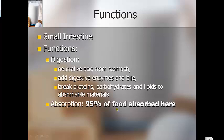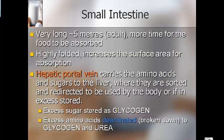95% of absorbed food is absorbed in your small intestine. Some fun facts: the small intestine is about five meters long in an adult — approximately 15 feet. Being long gives your body more time to absorb nutrients over a longer path. Your small intestine is also highly folded — all 15 feet are crammed into your lower abdomen. The folding increases the surface area and allows more nutrient absorption. A hepatic portal vein carries amino acids and sugars from the small intestine to the liver.